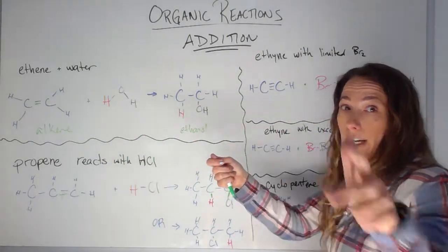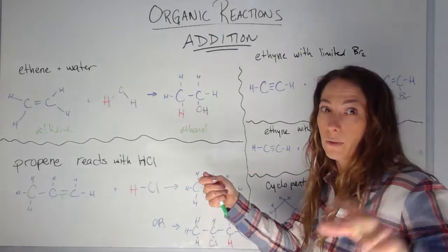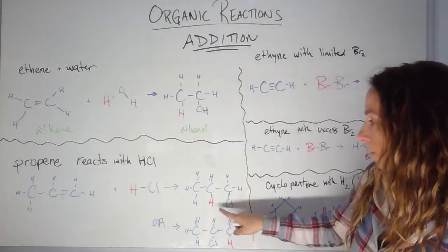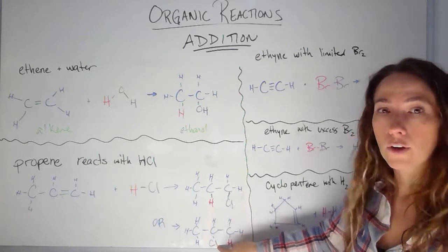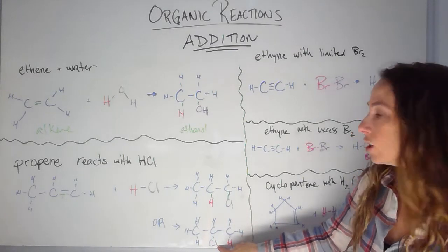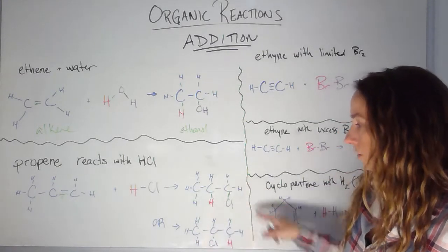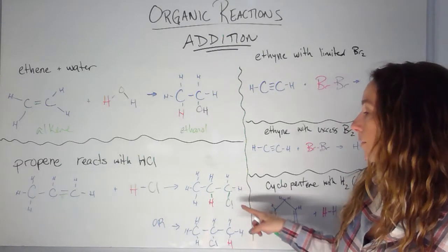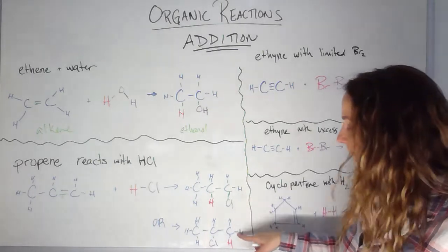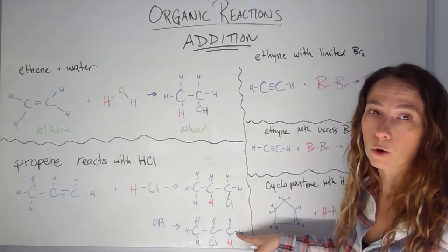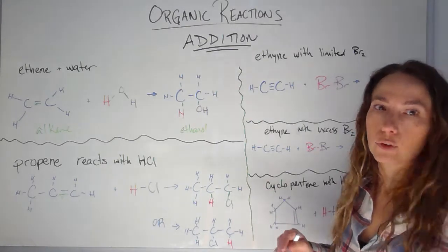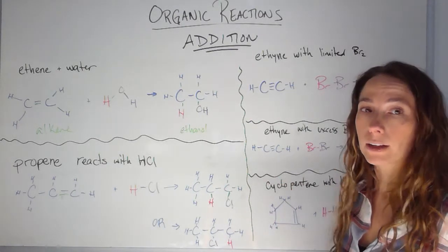So HCl. But actually I let go and I grabbed an H, but I could have let go and grabbed a Cl. And so not only could the middle carbon grab the H, but the middle carbon could have also grabbed a Cl. So in the lab, you end up with a mixture of these two compounds. You end up with 1-chloropropane and 2-chloropropane, just a matter of who grabbed that chlorine and who grabbed the hydrogen.